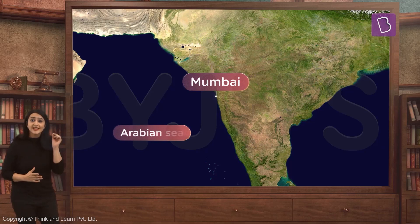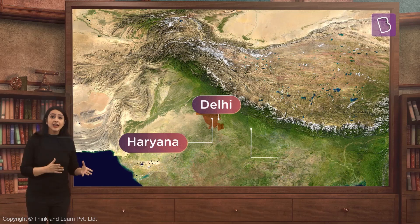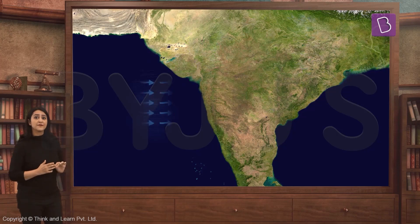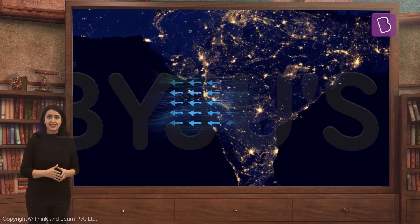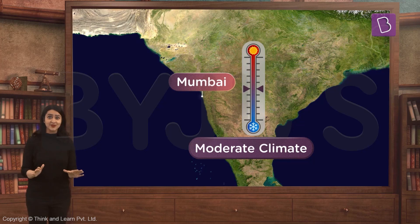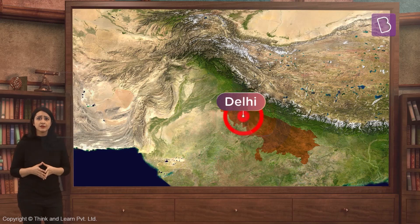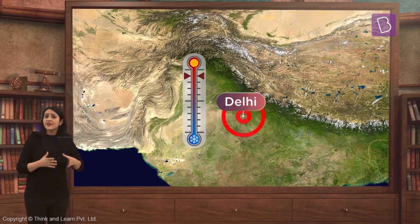Delhi doesn't have any large water body around it and is surrounded by land masses like Haryana and Uttar Pradesh. In Mumbai, we see the effect of the sea breeze during daytime and the land breeze during the night, so Mumbai has a moderate climate — neither too hot nor too cold — making it comfortable to live near. Delhi has no water body nearby, so there's no possibility of land or sea breeze, and living in Delhi is not as comfortable as living in Mumbai. This is why the distance of a place from the sea plays a huge role in how comfortable that place is going to be.